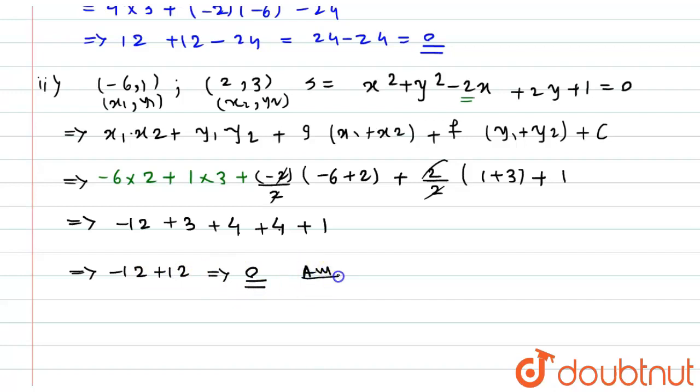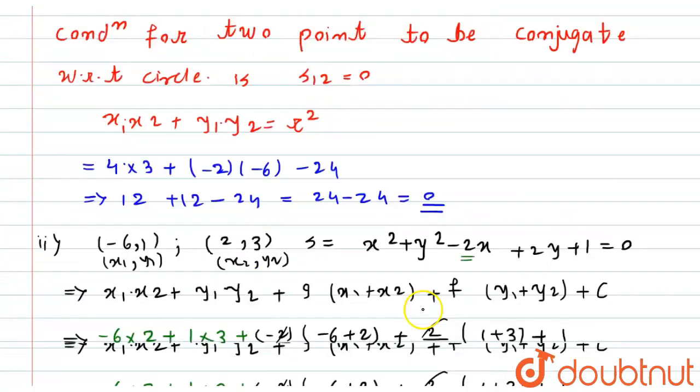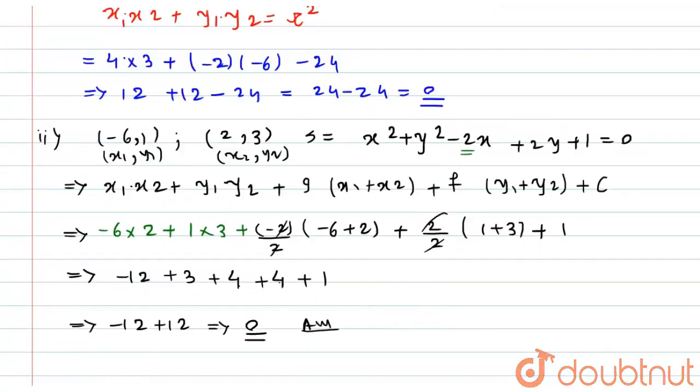So here we are getting the answer as 0. This implies that these two points are conjugate of this circle. So here we have shown both of them. So this is the required solution. Thank you.